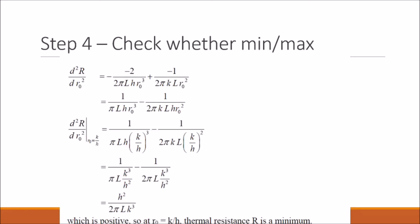Once we take our second derivative and plug in our value of r₀ at k over h, we end up with this positive value here. Because it's positive, we know that at this point our function of R is concave upwards, so we know that this must be a minimum.